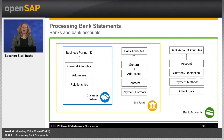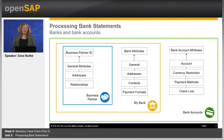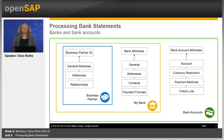All transactions with your house bank need to be reflected in the system. In other systems, this is done by postings on a General Ledger account, where each general ledger account reflects one bank account. Contrary to that concept, in SAP Business by Design the bank is a role of a business partner. If you create a bank, the system creates a business partner with general attributes, addresses, and relationships.